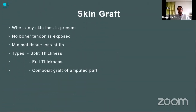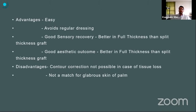Skin grafting can be done when only skin loss is present — either split thickness or full thickness. A more complex option is a composite skin graft taken from the amputated fingertip part, usable only with minimal tissue loss and when no bone or tendon is exposed. Advantages: it is simple, avoids regular dressing, and provides good sensory recovery. More thickness gives better sensory and aesthetic outcomes. Glabrous skin grafts from the palm of the hand or sole of the foot provide better aesthetic outcomes.